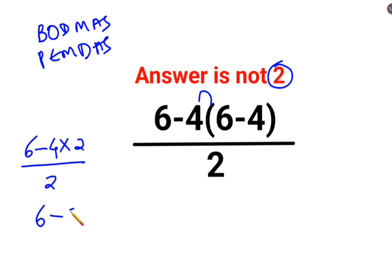So we have 6-8 upon 2. When you take 6 away from 8, the answer is 2, but now the sign should be of the bigger number. Out of 6 and 8, 8 is a bigger number and the sign with 8 is negative. So it will be negative 2 upon 2. So the answer for this question is supposed to be just minus 1.